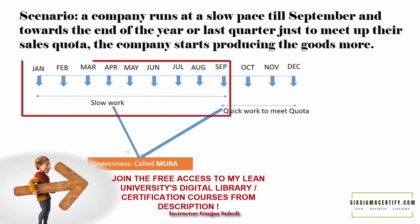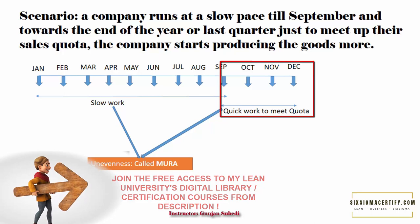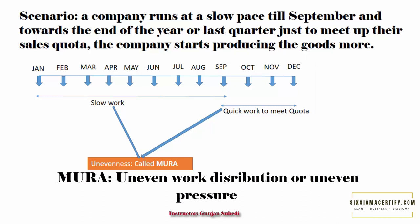Suppose a company runs at a slow pace throughout the year, and towards the end of the year — or for the last quarter — just to meet their sales quota, the company starts producing more goods. As you can see here, there is uneven pressure building up between the first three quarters and the last quarter of the year. This unevenness is termed Mura.